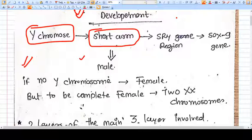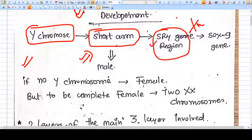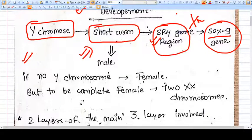On the short arm of the Y chromosome we have the SRY region. So this is the Y chromosome, and in the short arm we have the SRY gene. On the gene we have the SOX9 gene, and this will make you male.